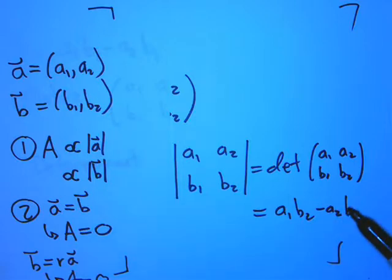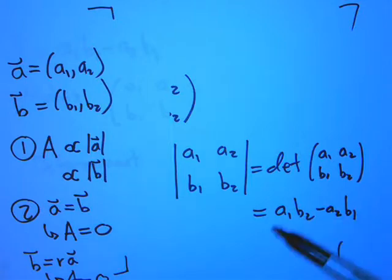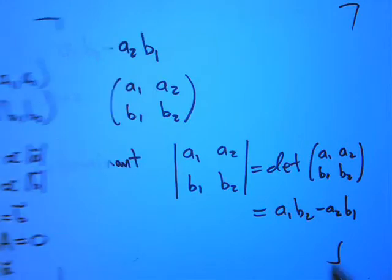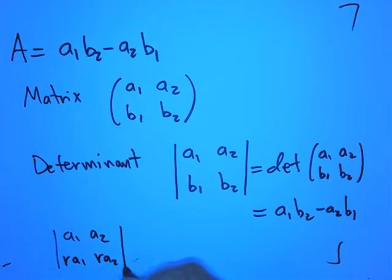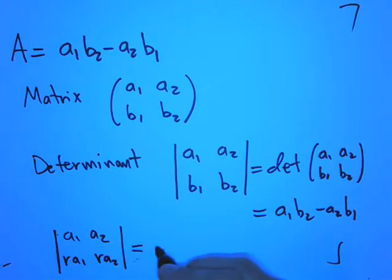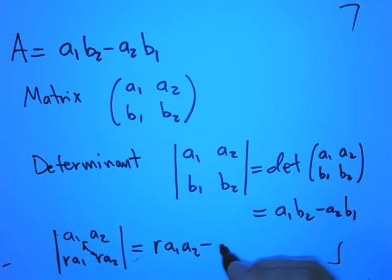If A and B are the same vector, I'm going to get a one, a two, minus a two, a one, that's definitely going to die, okay? And even if I have a multiple, let's try that, I'm going to take the determinant of a one, a two, r a one, r a two. That's going to be r a one, a two, from these guys, minus r a two, a one, equals zero, check, okay? So it's zero in the right fashion.